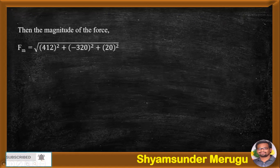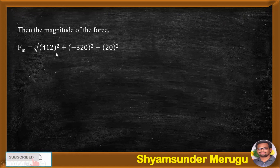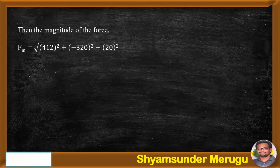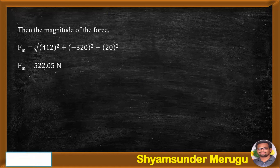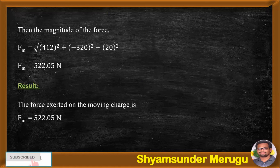Finally, writing the result. We can also find the magnitude of the force: Fm equals the square root of the sum of squares of all individual components — 412² plus 320² plus 20² — which gives Fm equals 522.05 N. The force exerted on the moving charge is Fm equals 522.05 N.